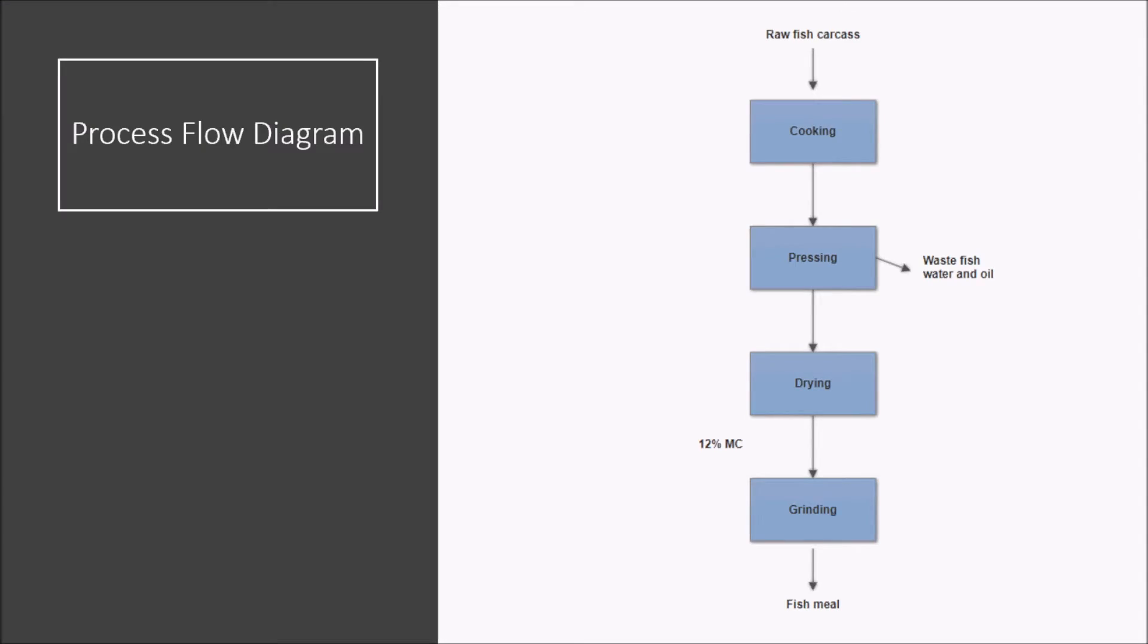A brief overview of our final design is shown to the right by this process flow diagram. Here we see raw fish carcass undergoing the cooking, pressing, drying, and grinding processes to become fish meal.